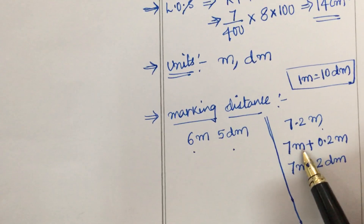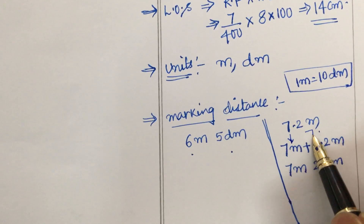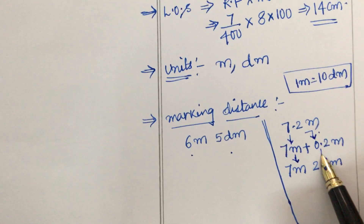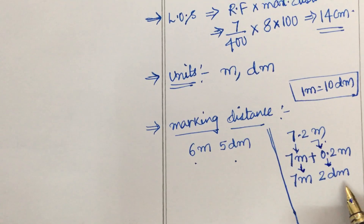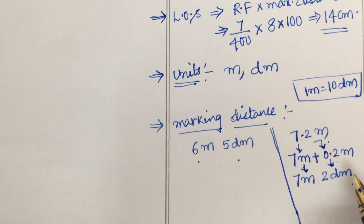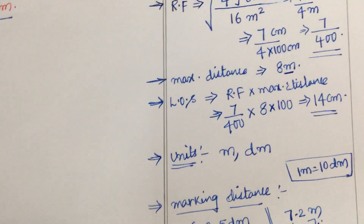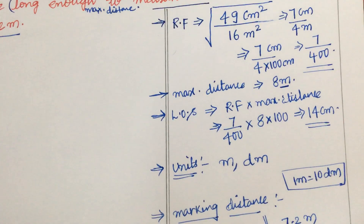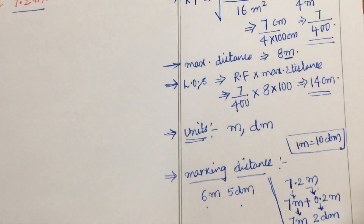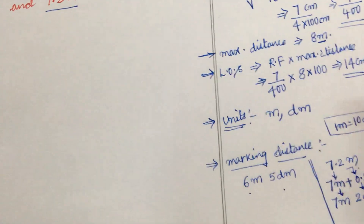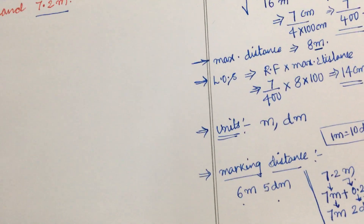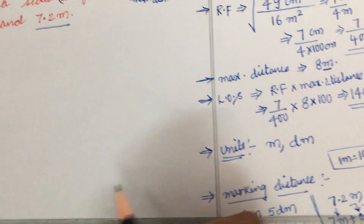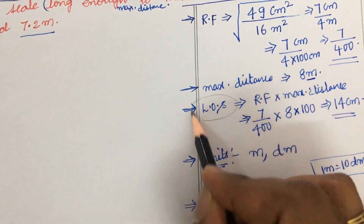One marking distance is given directly as 6 meters 5 decimeters. The other is given as 7.2 meters, which we represent as 7 meters and 0.2 meters. So 7 meters remains as is, and 0.2 meters is converted to 2 decimeters by multiplying by 10. This completes the calculation part before construction.